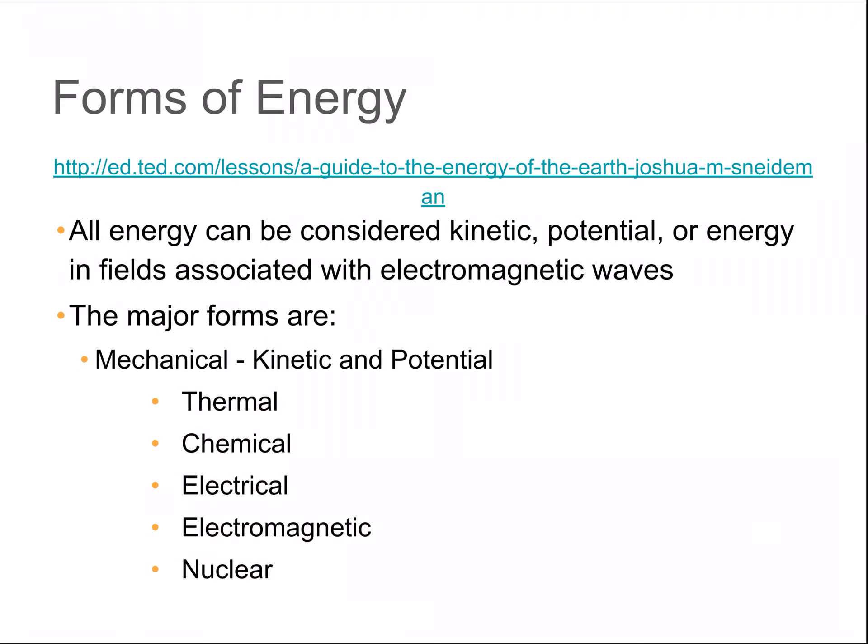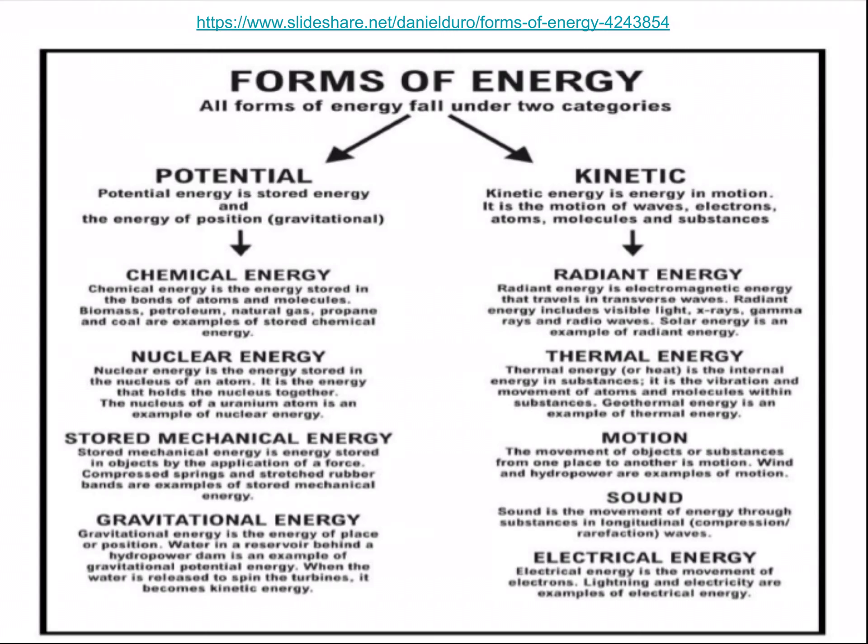So the forms of energy that we'll be talking about in here are thermal, chemical, electrical, electromagnetic, and nuclear. And how those are broken down, types of potential, types of kinetic. You guys will get practice with identifying those different types on a worksheet that will be assigned very soon.